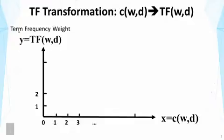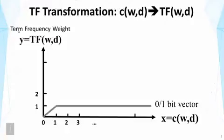This transformation function is going to turn the raw count of a word into a term frequency weight for the word in the document. Here I show in the x-axis the raw count and in the y-axis the term frequency weight. In the previous ranking functions, we actually implicitly used some kind of transformation. For example, in the zero-one bit vector representation, we used a transformation function as shown here.